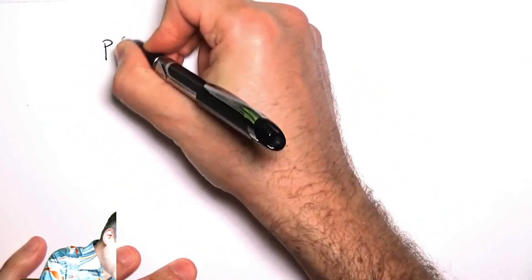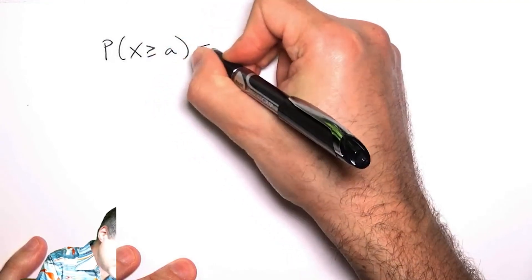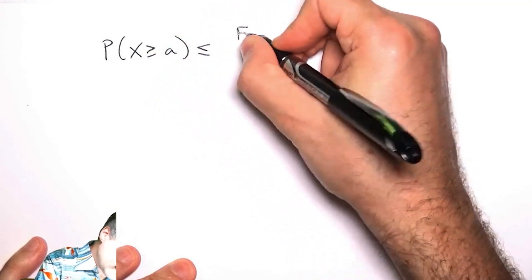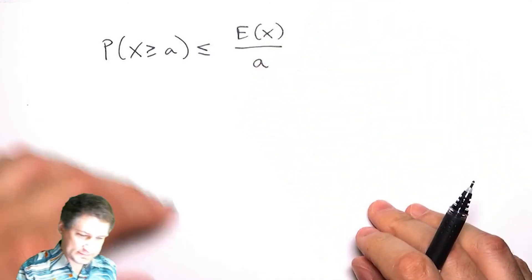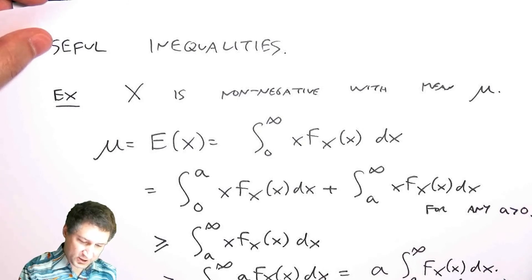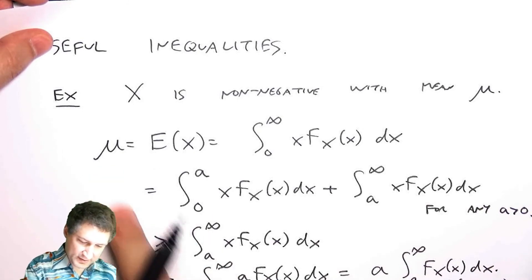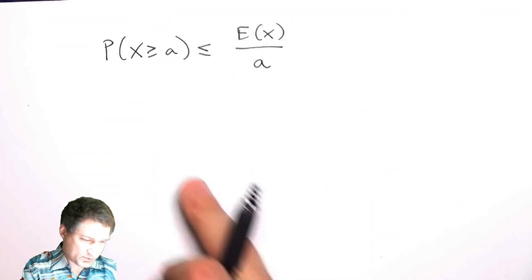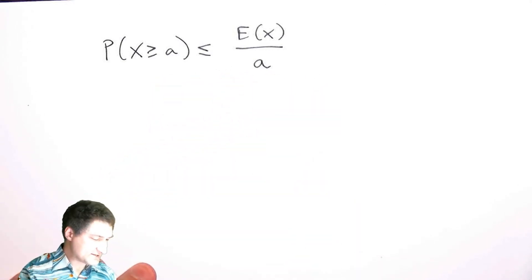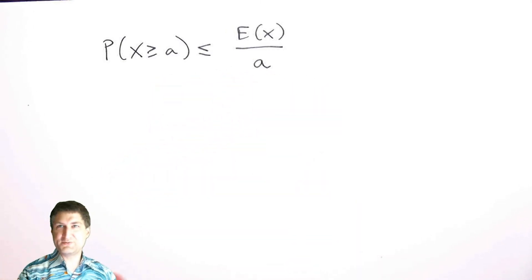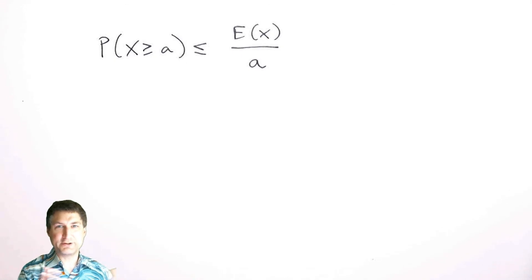If I rearrange what I learned here, the probability that X is greater than or equal to a is less than or equal to the mean over a. If you look back at this slide and think about it, all I'm doing is moving the a over here, and I'm saying the probability of this tail of the CDF is less than or equal to this.